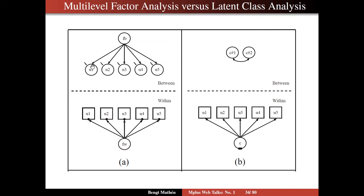We typically would want to have residual variances as well, although they are often quite small when you talk about clusters such as schools or communities, and they can actually then be ignored. Now on the right-hand side, you have the tradition in latent class analysis, which seems to be the original approach to multilevel modeling. So here you have the same five indicators, and now you have a latent class variable C influencing the indicators or making them correlated, instead of the FW continuous factor.